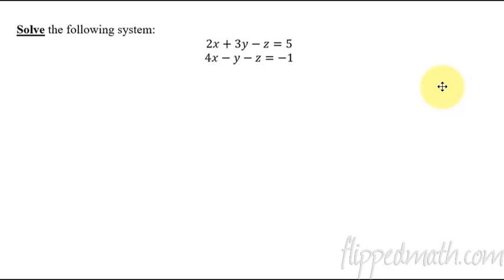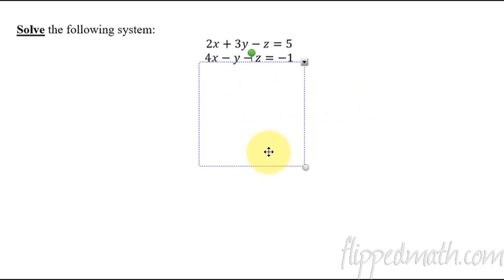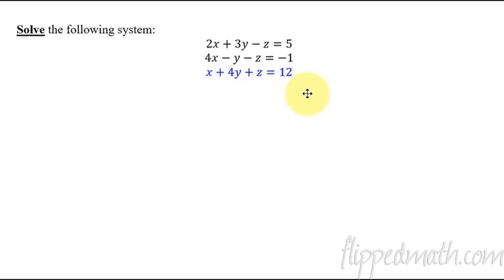For the first example, you're going to see these two equations: 2x plus 3y minus z. Notice in both of these equations we have an x, a y, and a z. You can't solve this system — the only way you can solve it is if we have one more equation. With three equations, you can solve a system that has three different variables.